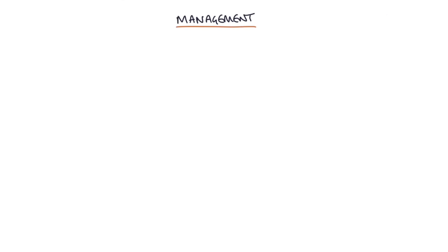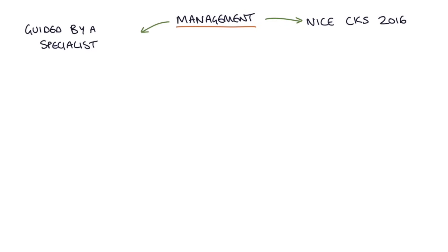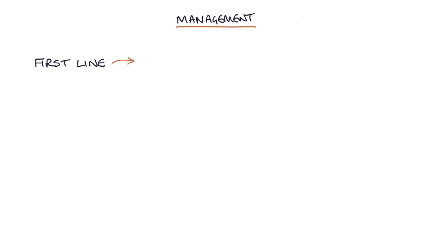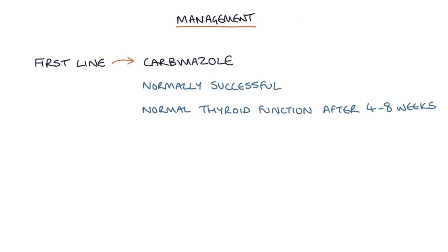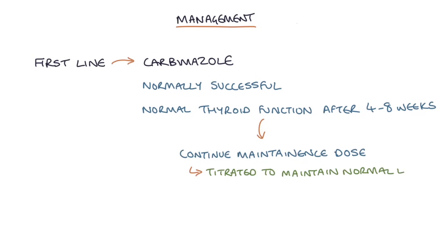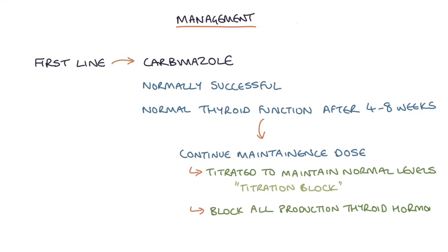Management of hyperthyroidism is guided by a specialist, as medications have significant potential for side effects — this is based on the NICE Clinical Knowledge Summaries from 2016. The first-line anti-thyroid drug is carbamazole, which is usually successful in treating Graves disease and achieves normal thyroid function after about four to eight weeks. Once normal function is achieved, the patient continues on a maintenance dose. This can be titrated to maintain normal levels — known as titration block — or given at a higher dose to block all thyroid hormone production while thyroid hormone is replaced with levothyroxine, known as block and replace.